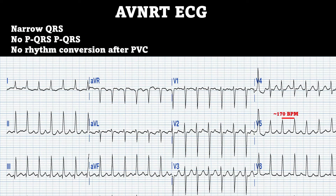This is our 12 lead of an AVNRT. I see regular narrow complex tachycardia with no P-waves. The rate is around 160 to 170 beats per minute, which is probably a bit too fast for sinus tachycardia. This helps drop down our differentials to AVRT, AVNRT, and atrial flutter. The PVC is kind of key here — there aren't any flutter waves noted after the PVC, so flutter is kind of out. You can see our PVC in V4 and V5. The rhythm also did not convert after the PVC, so this takes out AVRT and leaves our AV nodal re-entry tachycardia.